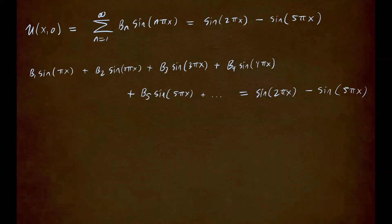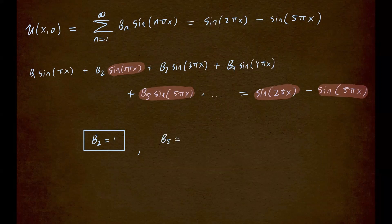Now, notice that this is your value for b2. So these two functions are the same, so I can equate their coefficient. So I know b2 has to be 1. And then the next term that appears on the right-hand side is this guy right here. When n equals 5, that matches this one right here. So b5, we get b5 happens to be negative 1. That's the coefficient of sine of 5 pi x on the right-hand side.